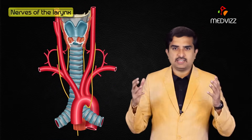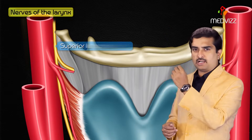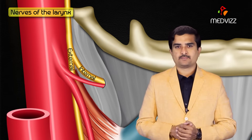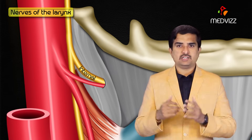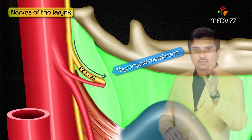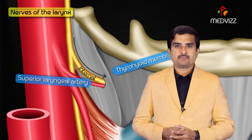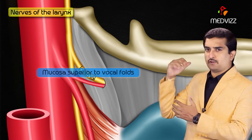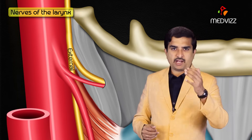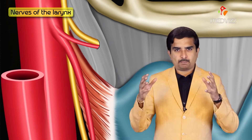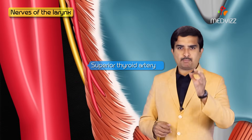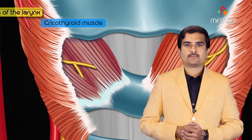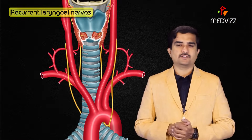The nerves of the larynx include the superior laryngeal nerve, which divides into internal and external laryngeal nerves. The internal laryngeal nerve enters the thyrohyoid membrane with the superior laryngeal artery and provides sensory innervation to the mucosa superior to the vocal folds. The external laryngeal nerve travels with the superior thyroid artery and provides motor innervation to the cricothyroid muscles.